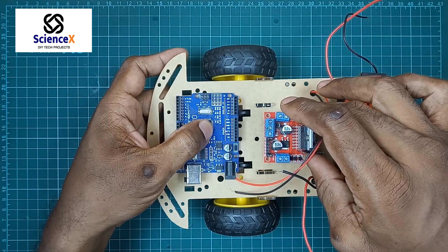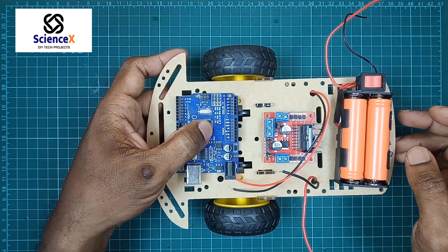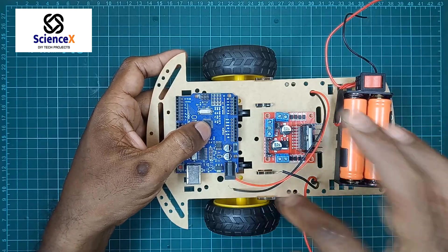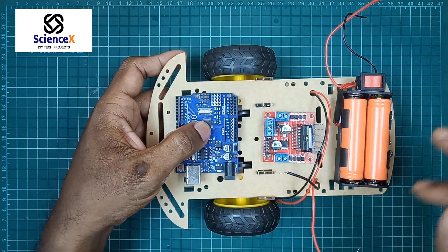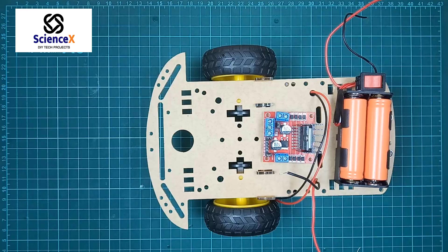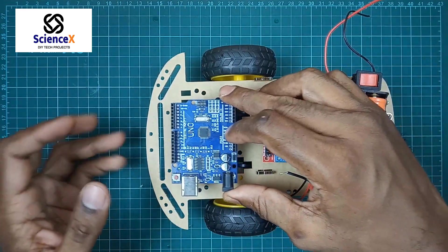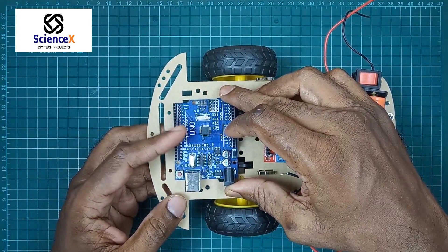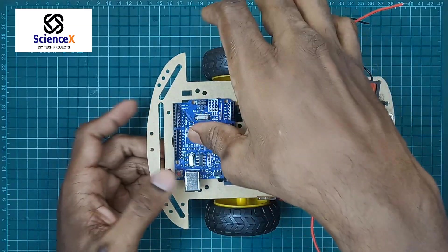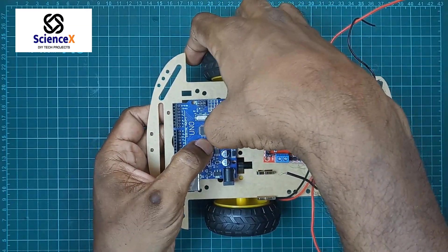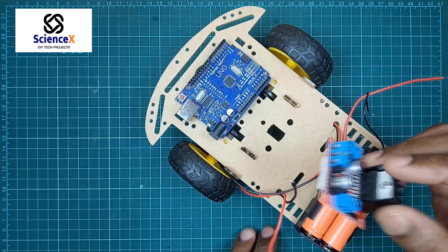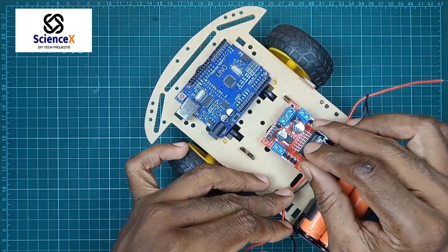Then we have to fix the components top of the chassis. So here we are going to fix the four components. First one is Arduino Uno, L298N driver and then one battery, two sensors we have to fix. First I take the Uno board and paste it with double side tape. And then I take the L298N driver. Also I fixed like this.